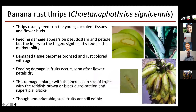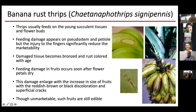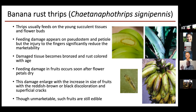Another pest, though not so economically important, is banana rust thrips. Thrips usually feed on young succulent tissue and flower buds. You can find thrips damage on the pseudostem — there are V-shaped notches in the petiole where it joins the leaf lamina to the pseudostem. These thrips feed when the fruits are tiny and touching together. As the fruits grow and increase in size, the damage areas increase in size as well.